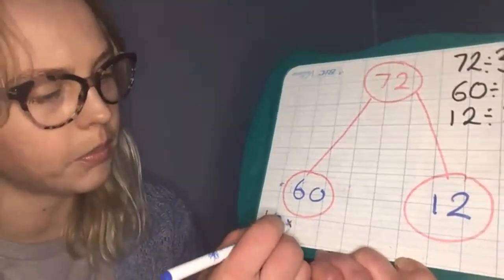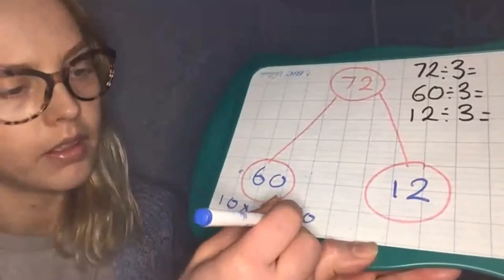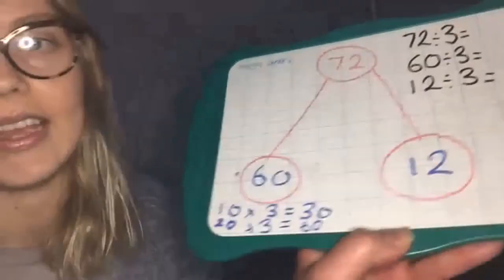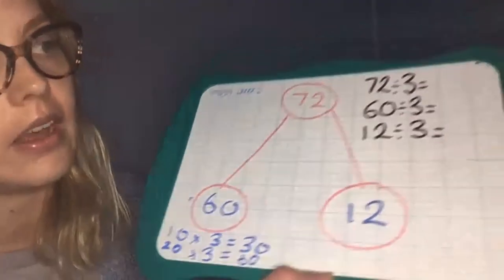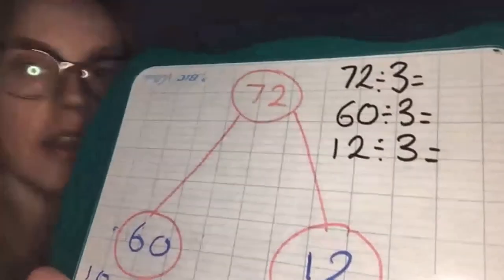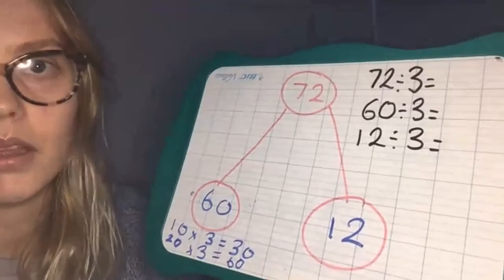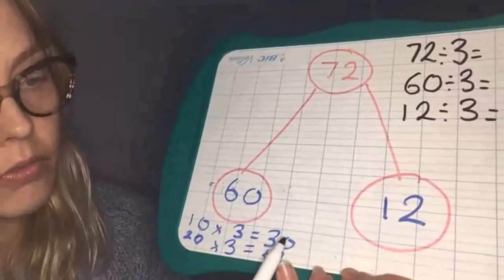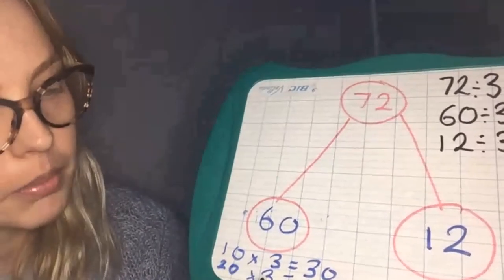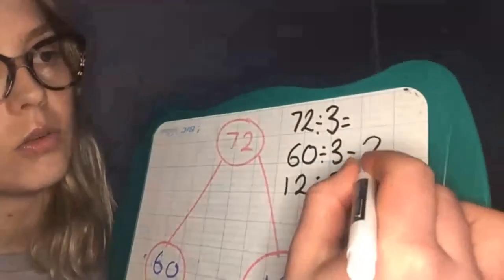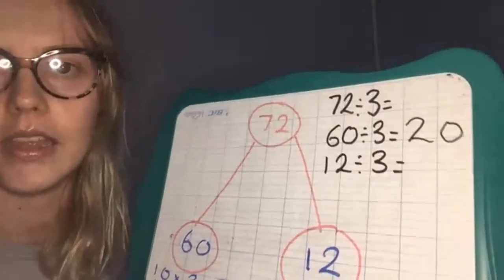Well, 30 is a multiple of three. How many lots of threes go into 30? Hopefully you'd say 10 — 10 times 3 equals 30. Therefore, if we double both of those, 20 times 3 is going to make 60. So how many lots of threes go into 60? It is 20. So 60 divided by 3 is 20.